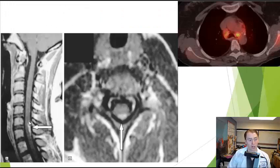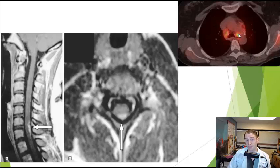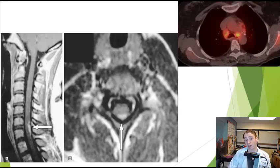This is someone with neurosarcoidosis. You can see this contrast-enhancing lesion in the lower cervical spine. People with sarcoidosis often have dural involvement — inflammation coming from the dura or meninges, the coverings of the spinal cord. This is a systemic disease; one other symptom is enlargement of the hilar lymph nodes, seen here with increased FDG-PET uptake in the hilar area.